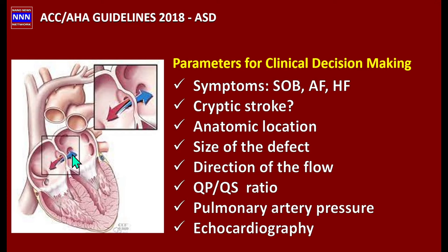We also need to look at the Qp:Qs ratio — an important term to be familiar with. Qp is the flow across the pulmonary circuit, and Qs is the flow across the systemic circuit. This ratio is a key number used to decide whether a patient needs device or surgical treatment. Pulmonary artery pressure is also of great importance.